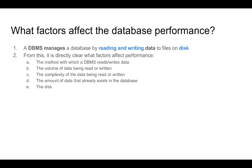Let us look at the factors that affect database performance. A DBMS manages a database by reading and writing data to files on disk — that is what a DBMS does every time you make a database query. It is managing the database by manipulating actual data, and this data is on files on a disk, on a file system backed by actual disks. The method with which the DBMS is storing, reading, and writing data from these files is a factor that will affect performance. The volume or complexity of the data being read or written will also affect performance, as will the total amount of data that already exists in the database.